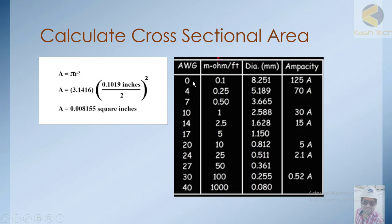Here you can see that as the wire gauge number increases, the diameter decreases. AWG 0 has a resistivity of 0.1 ohms per foot, a diameter of 8.251 mm, and an ampacity of 125 amperes. As the AWG number increases, the resistance per foot increases — confirming that a thinner conductor has higher resistance.